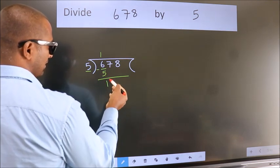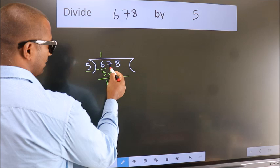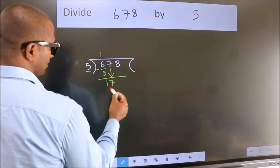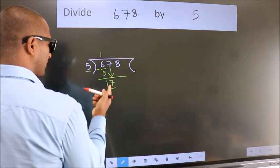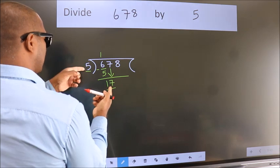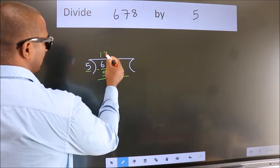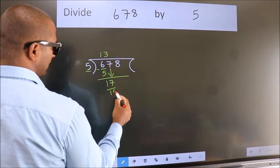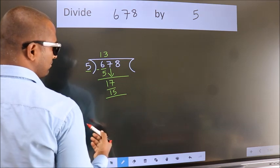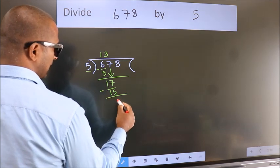After this, bring down the beside number. So, 7 down. So, 17. A number close to 17 in 5 table is 5 threes 15. Now, we subtract. We get 2.